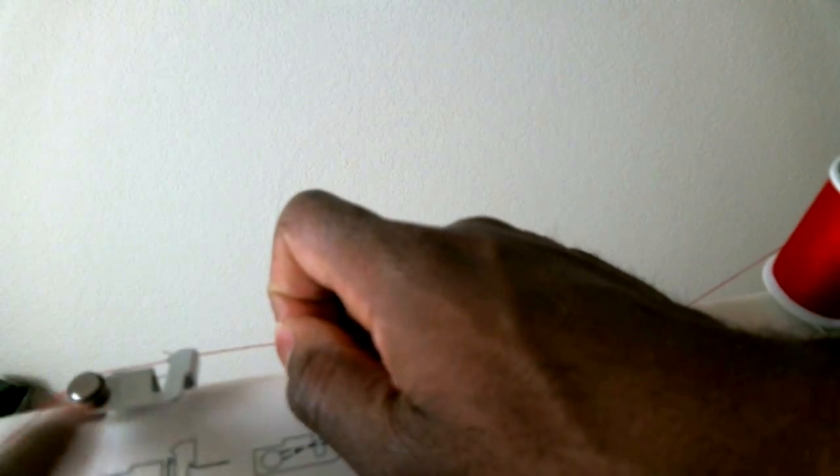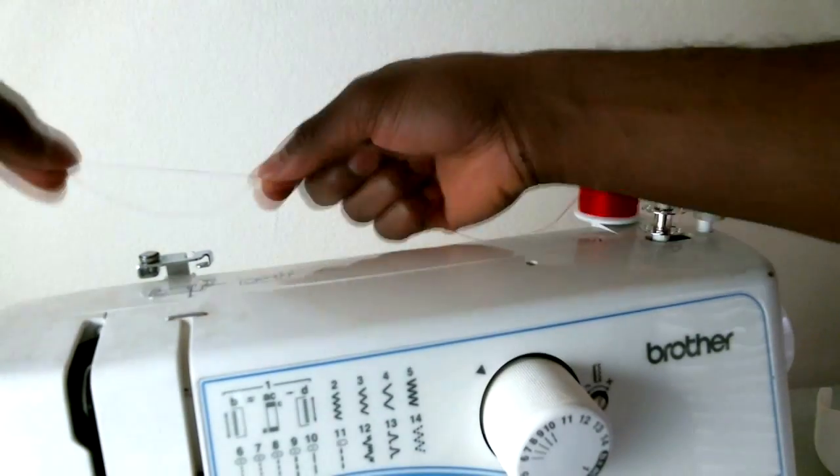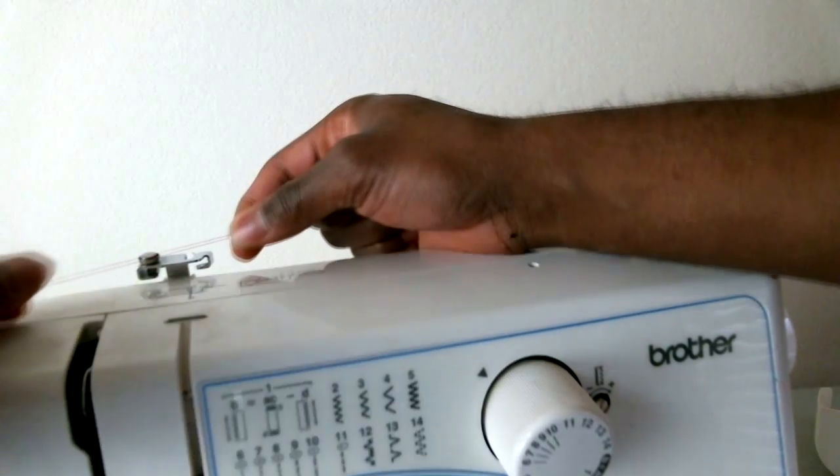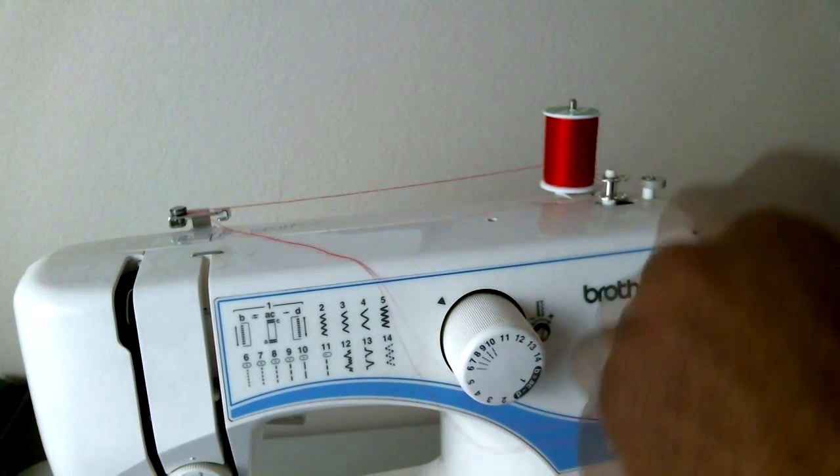If you have the Brother LX 3125, we're going to take the thread and wrap it around twice. Take it and wrap around once and wrap around again. It makes it a little tighter because it seems to come out if you don't do it twice.